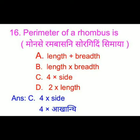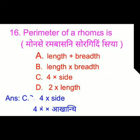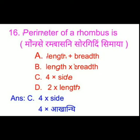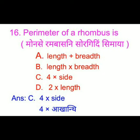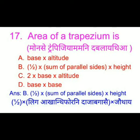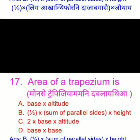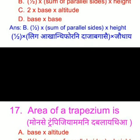The perimeter of a rhombus — we have four options and the right answer is option C: 4 into side. The area of a trapezium — we have four options.